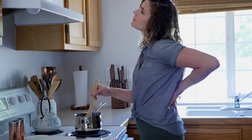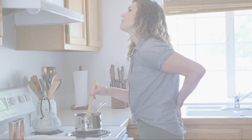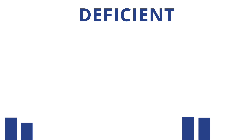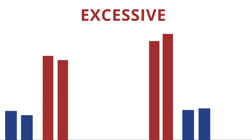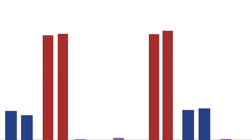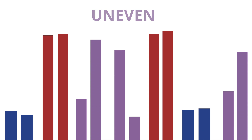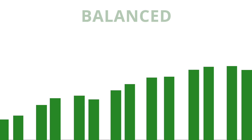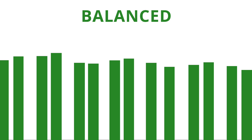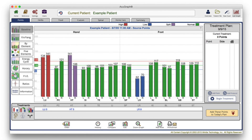Imbalances, if left untreated, lead to symptoms. A meridian shown in blue indicates deficiency in chi, one shown in red indicates excessive chi, and one in purple indicates that that meridian's chi is unevenly distributed between the right and left sides of the body. Green means that your energy is flowing well and in balance.